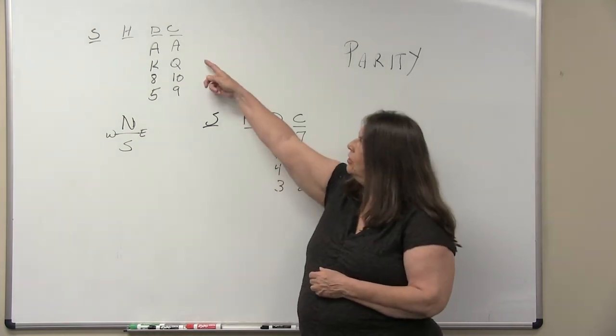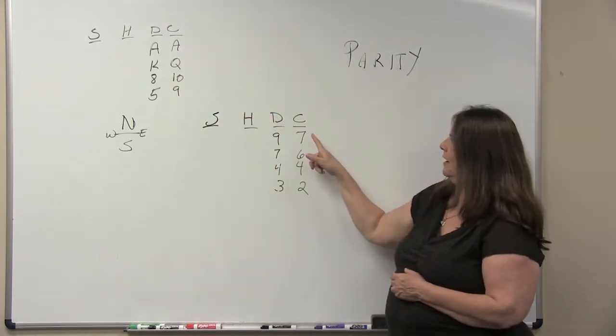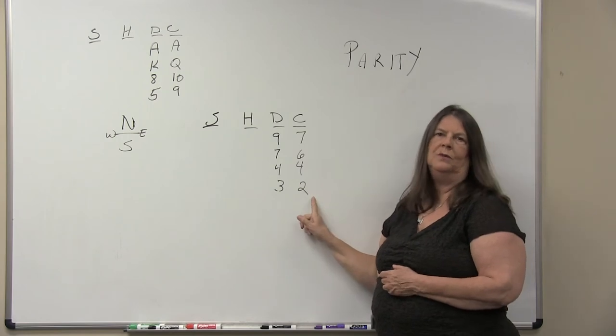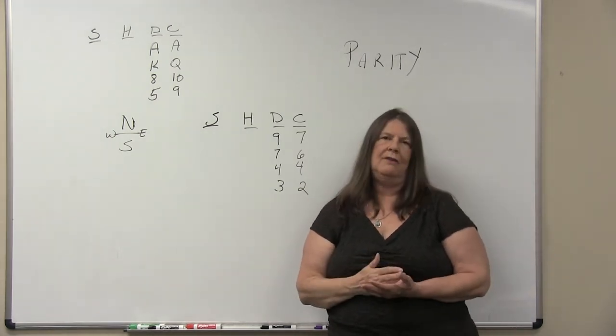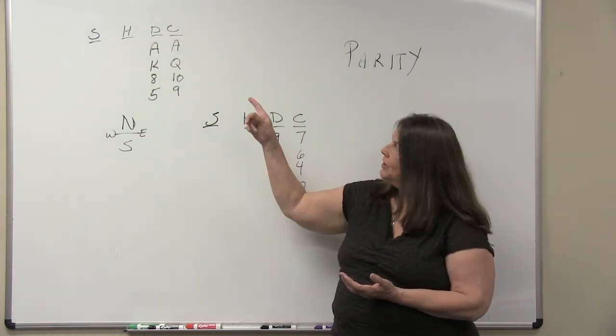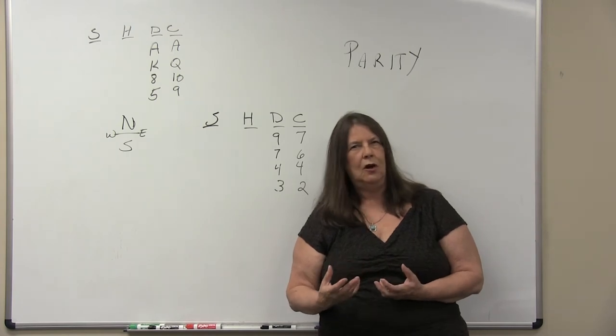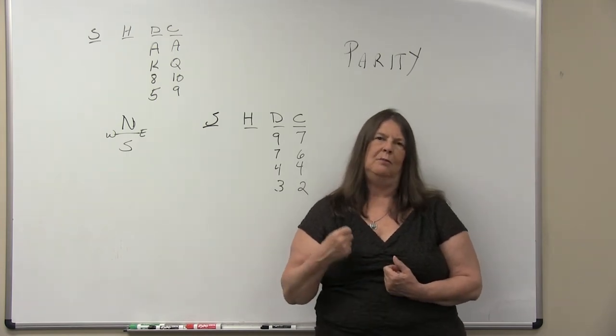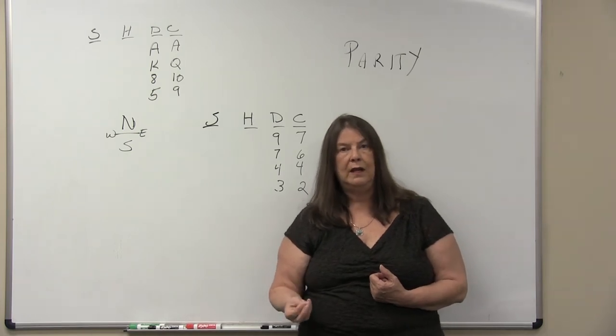Now if you look at clubs, they have the ace, the queen, the ten, and the nine. I have the seven, the six, the four, and the two. Even though I also have length in clubs with dummy, I don't have a club high enough in my hand to keep the ten of clubs from becoming a trick. So that's not a suit that I have to guard. I don't have a card that might create a situation where one of the smaller cards can't win.